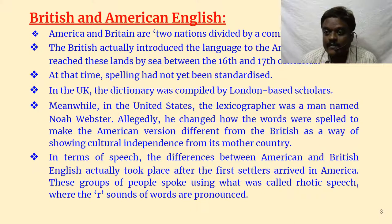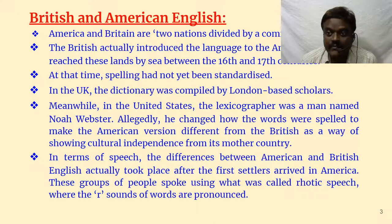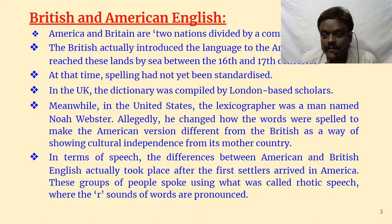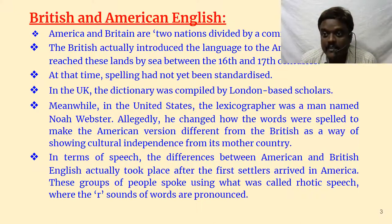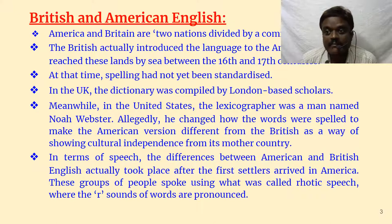If there is a vowel after R, then R is pronounced; otherwise R is muted in British English. Whereas in America, even today, R is always heard when they speak words. There are differences not only in spellings and pronunciation, but even in grammar. Many differences we can find in British English compared to American English.